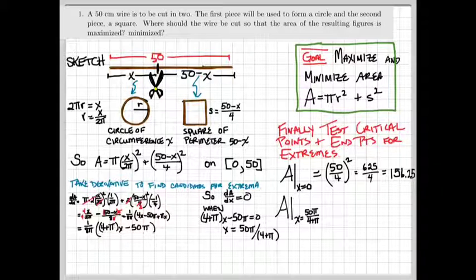When x is 0, the entire area is made into a square, so 50 divided by 4 squared would be the area, and we'd get 156 and a quarter centimeters squared.